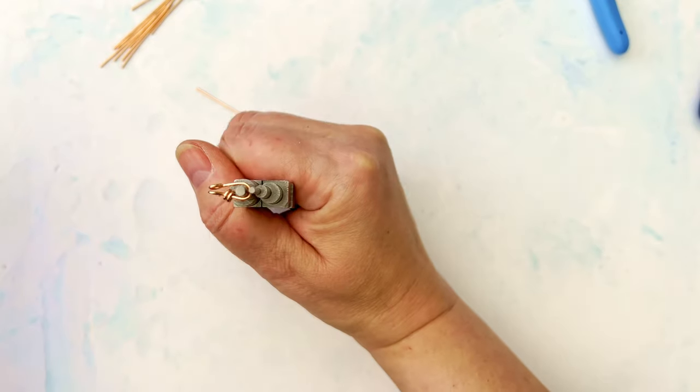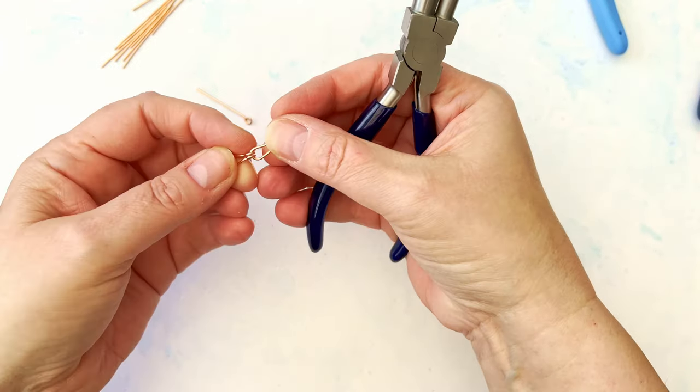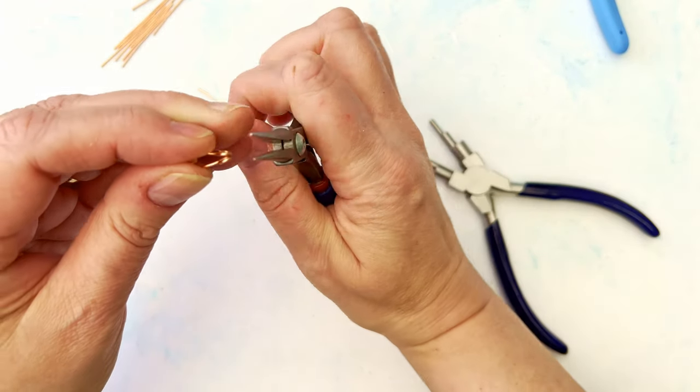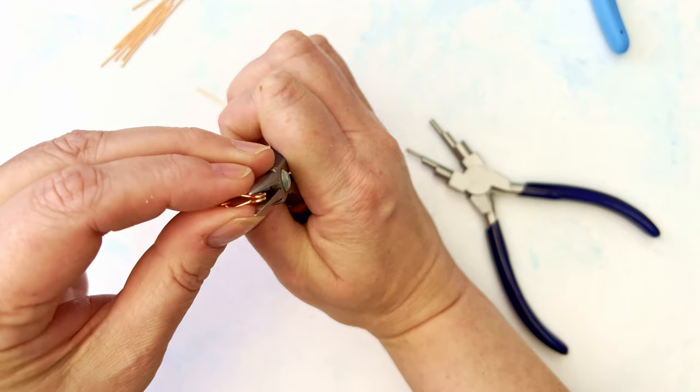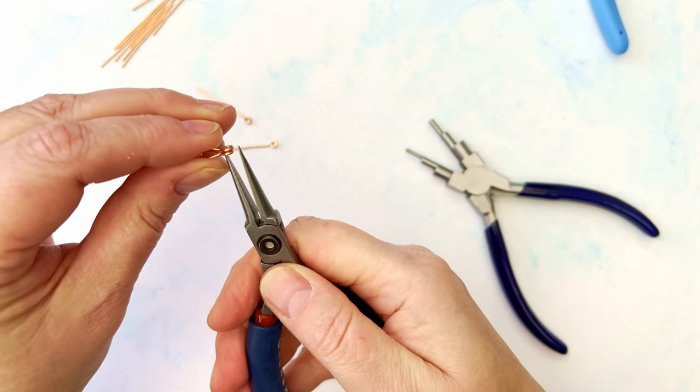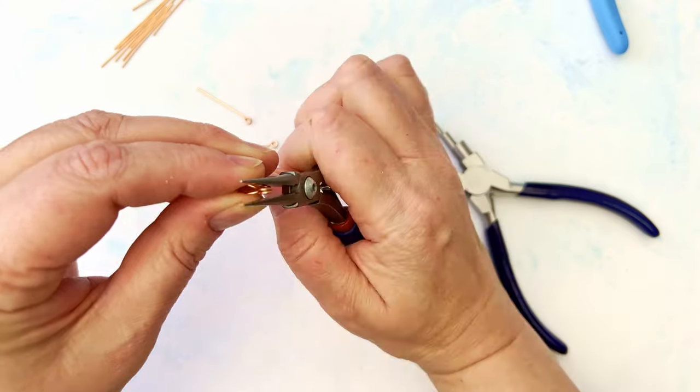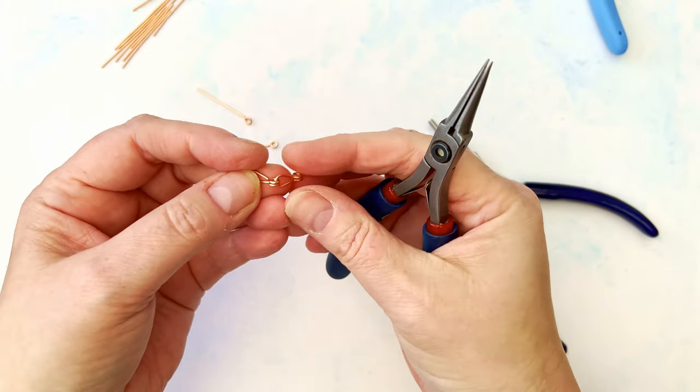As you can see, that one is now attached. So again, come in with your chain nose, give it a squish, just give them a quick tidy up if they're a little offset. We'll just do one more.